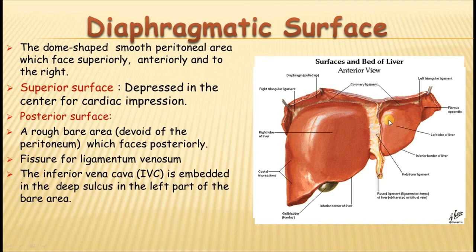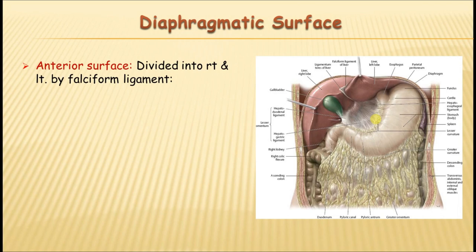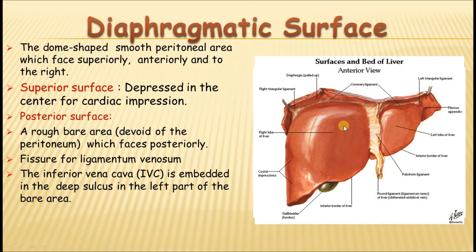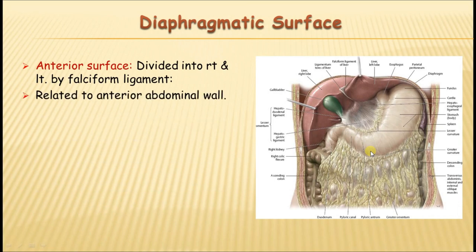The anterior surface is related to the right costal margin on the right, the left costal margin on the left, with the ribs separated from the liver by the diaphragm. In the center, between the two costal margins, it is related to the xiphoid process and the anterior abdominal wall. This surface is divided by the falciform ligament into right and left parts.